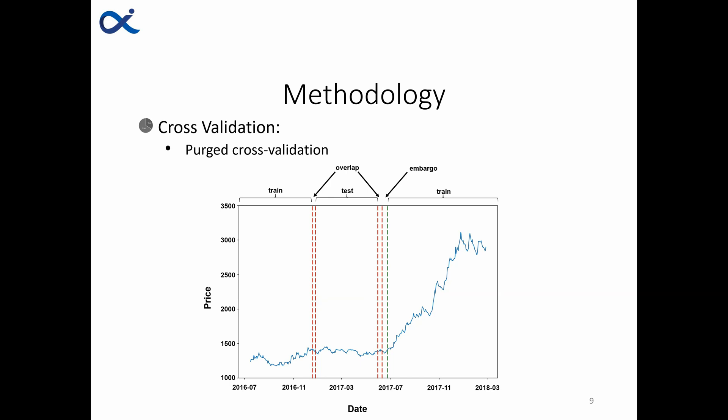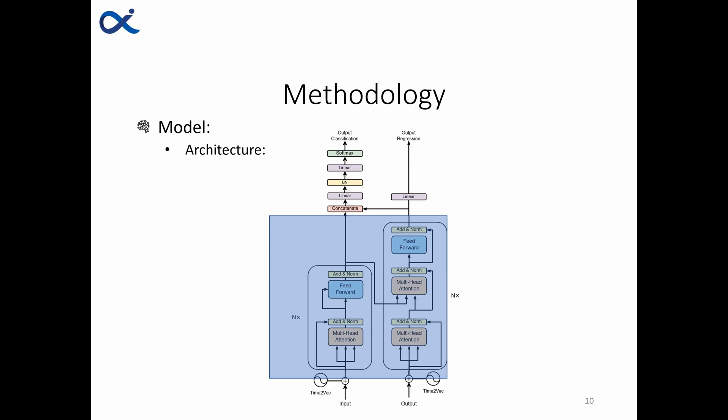There might be some information in the training set that might help in prediction of the test, so we remove a proportion of the data to be sure there is no data leakage. Now let's talk about the architecture of multi-task transformer model. The main part is the transformer which is highlighted here.